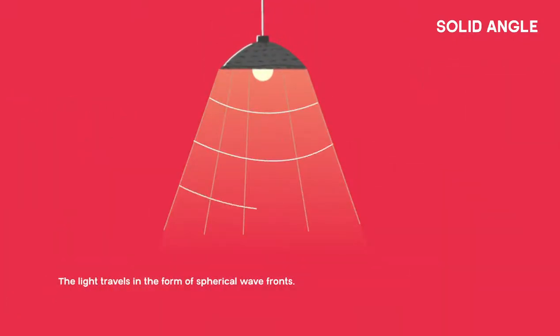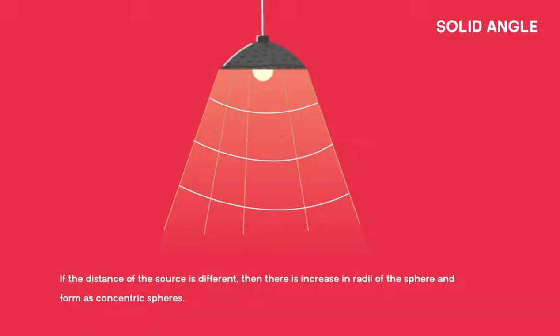Have you ever observed the light? The light travels in the form of spherical wave fronts. If the distance of the source is different, then there is an increase in radii of the sphere and forms as concentric spheres.